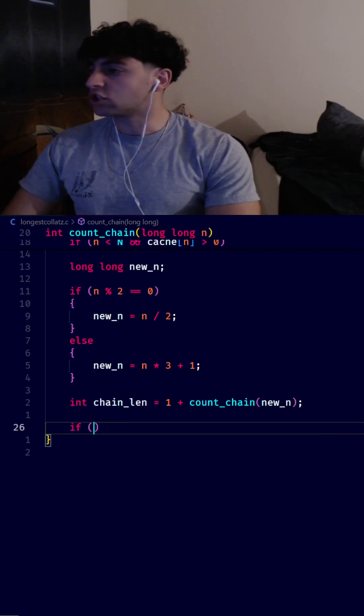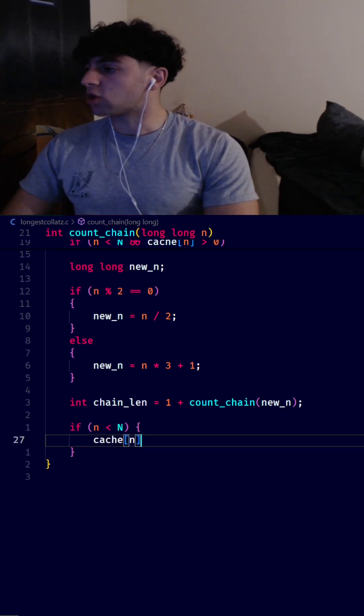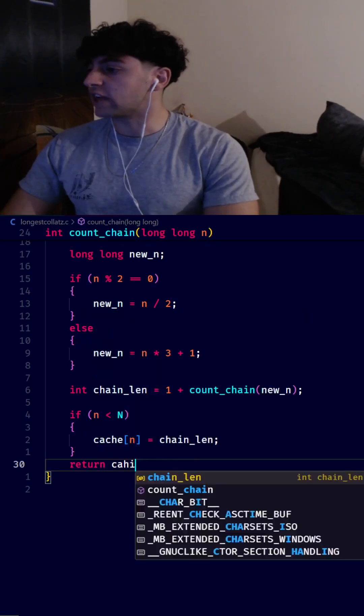After computing the chain_len, we'll check if n is smaller than 1 million. Then we want to store our computed chain length. And lastly, we want our function to return that chain length.